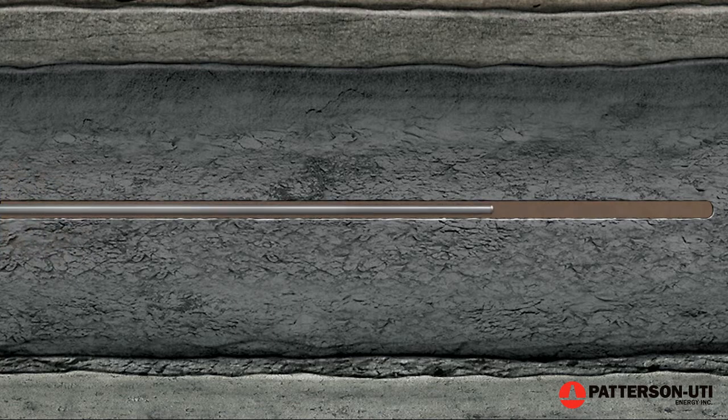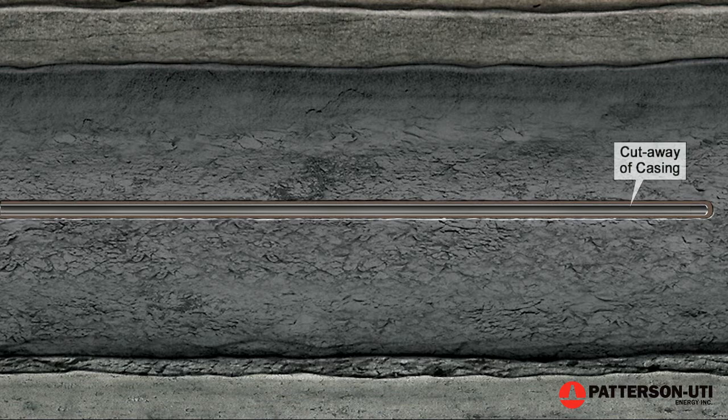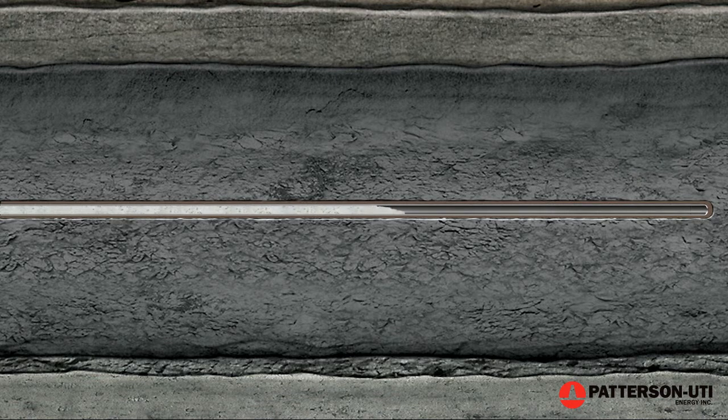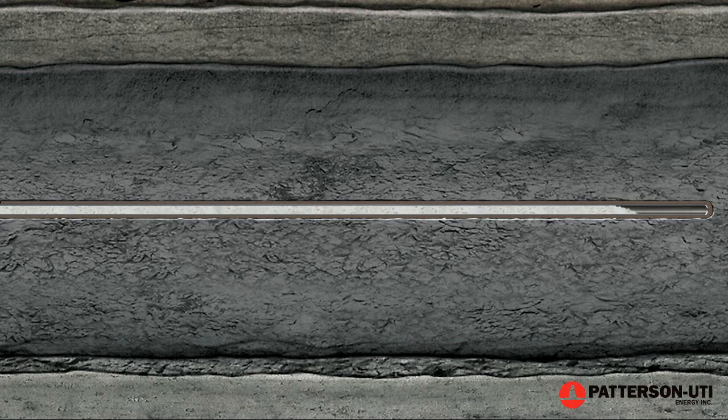Production casing is now inserted into the full length of the wellbore. Cement is again pumped down the casing and out through the hole in the casing shoe, forcing the cement up between the casing and the wall of the hole, filling the open space known as the annulus.